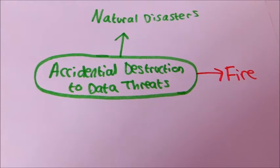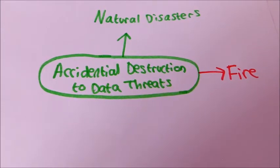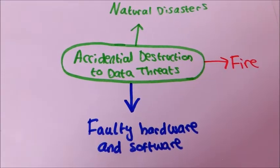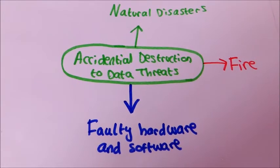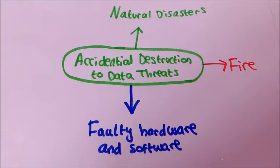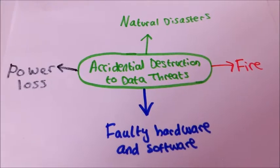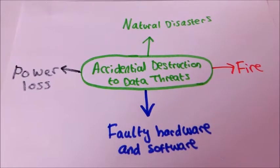Precautions need to take place to minimise the threats such as no smoking and power sockets shouldn't be overloaded. Faulty hardware and software. Software can contain bugs that can cause damage or loss to data. Power loss. No data can be accessed if the computer has no power.